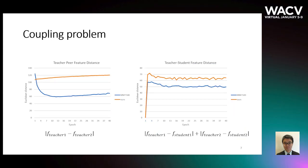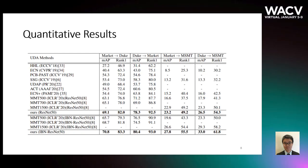To validate the effectiveness of our proposed method in facing the coupling problem, we measure teacher-pair and teacher-student representation distance. Thanks to different initialization, MMT maintains a large distance at the beginning, but it decreases as training goes on. Our proposed asymmetric branches work as a feature diversity encouragement that always keeps a large distance.